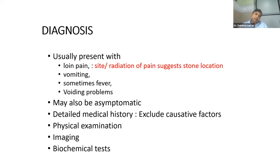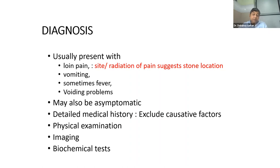When a patient comes to emergency, you need to diagnose. There is a typical history of loin pain, sometimes loin to groin pain, sometimes a dull ache. Sometimes there is associated vomiting; if there is infective pathology, fever. Some patients will have voiding problems, particularly lower ureteric stones — this patient might have strangury. Some patients with a bladder stone will present with hematuria, frequency, urgency, and intermittency. If the stone is lodged in the prostatic urethra, it might cause acute urinary retention.